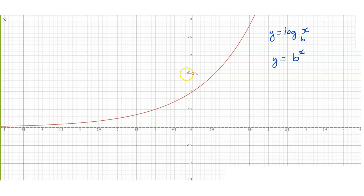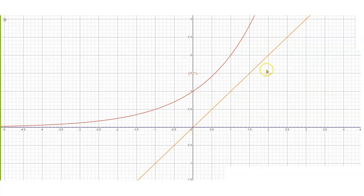Let us first consider the graph of y equals 2 raised to the x. In this case, we are looking at y equals b to the x where b is greater than 1. In order to sketch the graph of its inverse, we have to reflect this line along the line y equals x. Let us get some points from our graph: the point (1, 2), (0, 1), and (-1, 0.5).